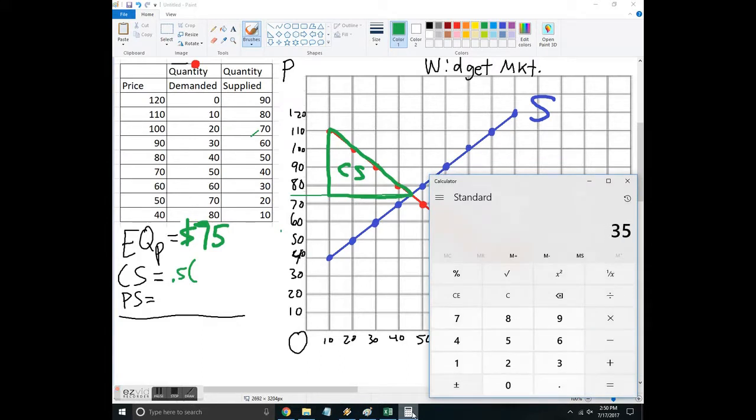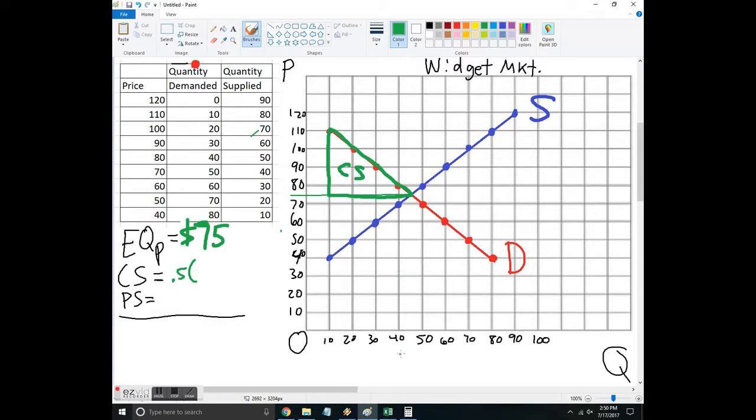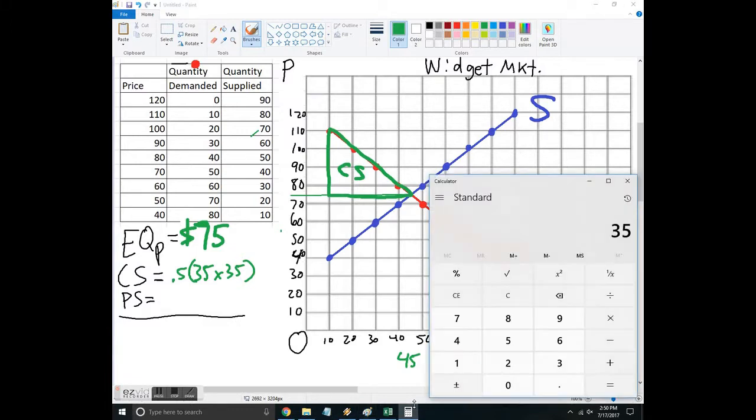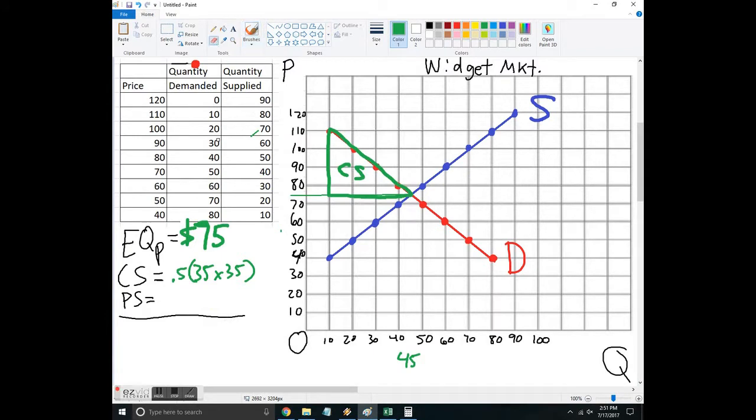It is one half, and we're going to go from 75 up to 110, which is 35. Then we're going to go from 10 out to the quantity at equilibrium, which is right about 45. So 35 times 35, times 0.5, equals 612.5.